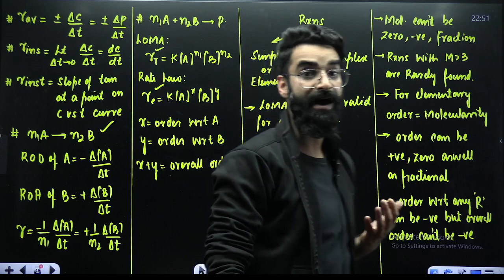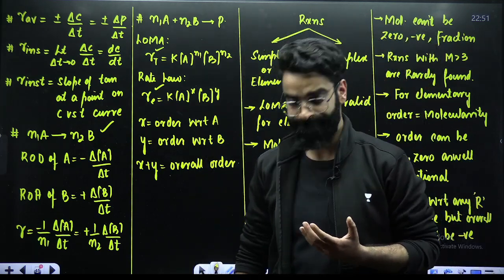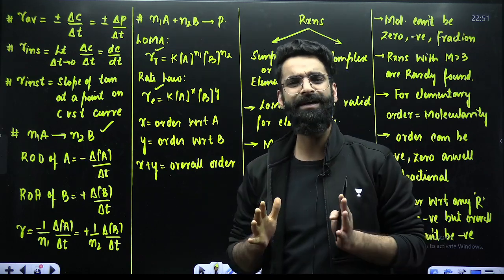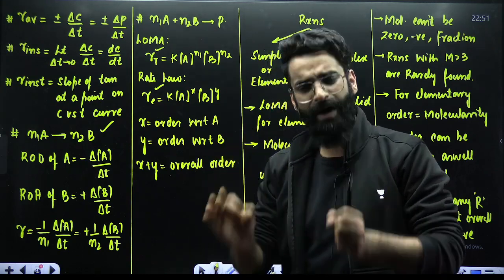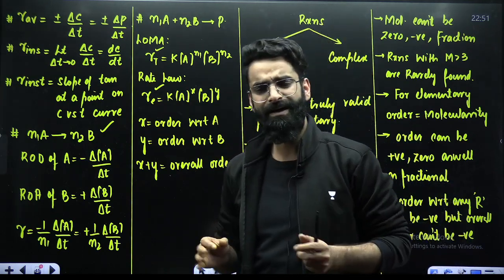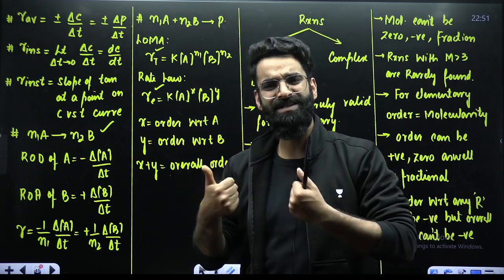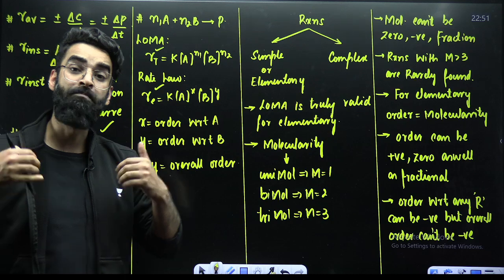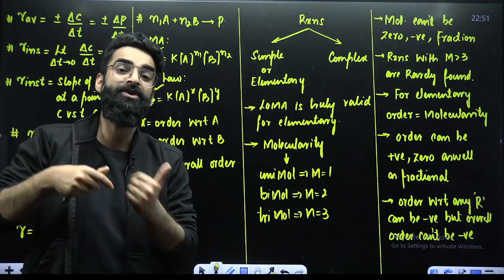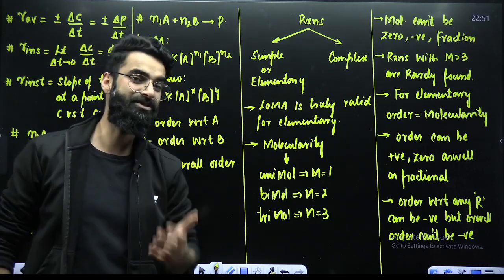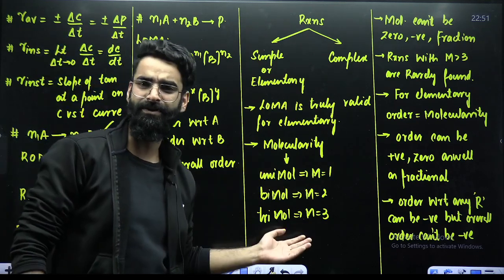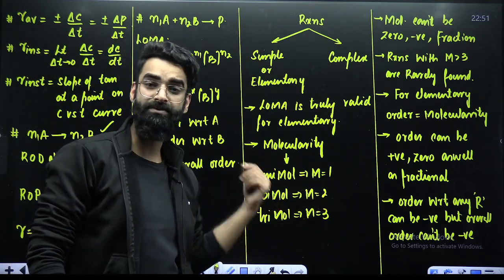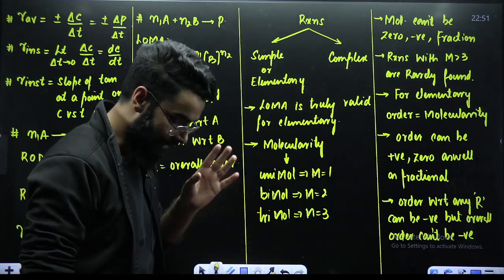Then comes the term molecularity. As per collision theory, for the reaction to proceed, reacting species must collide first. The number of reacting species which must collide simultaneously to form the products defines molecularity. Based on that, you have: unimolecular with molecularity 1, bimolecular with molecularity 2, trimolecular with molecularity 3, and so on.